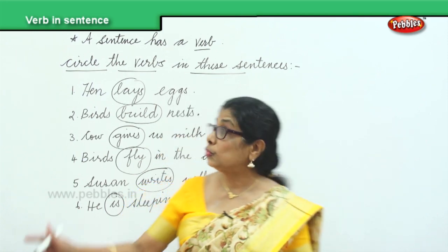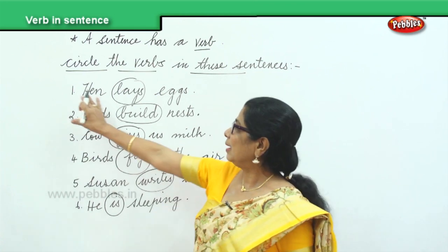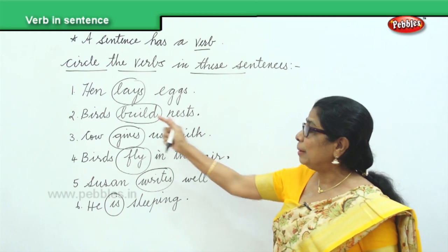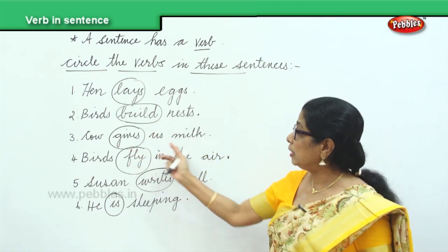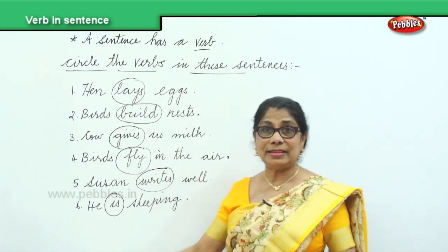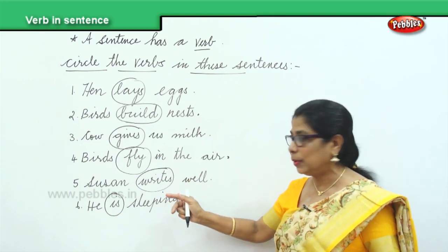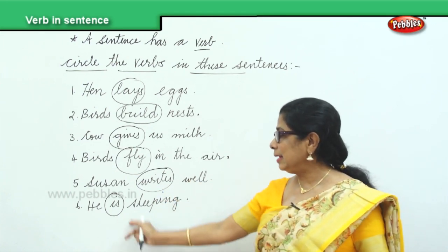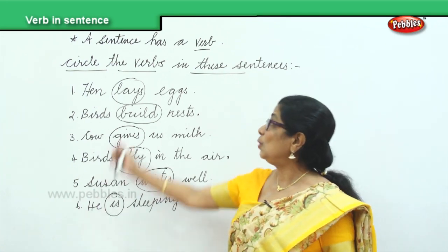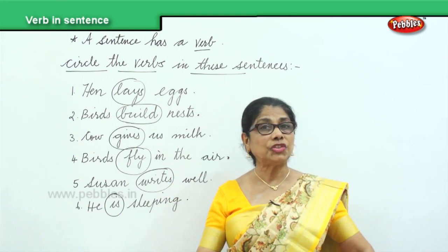So what did you do now? You circled the verbs in the sentence. Hen lays eggs — lays is the verb. Birds build the nest — build is the verb. Cow gives us milk — gives is the verb. Birds fly in the air — fly is the verb. Susan writes well — writes is the verb. And he is sleeping — is sleeping is the verb. So we learn to identify the verb in a sentence and circle it.